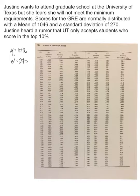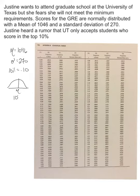Justine heard a rumor that the University of Texas only accepts students who are in the top 10% for their GRE. So 10% converts to a decimal of 0.10. Looking at the normal distribution with a mean of 1,046, she's saying UT only accepts students that score in the top 10%.